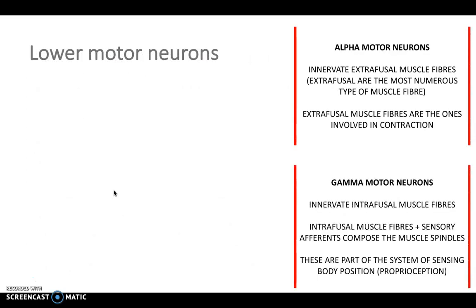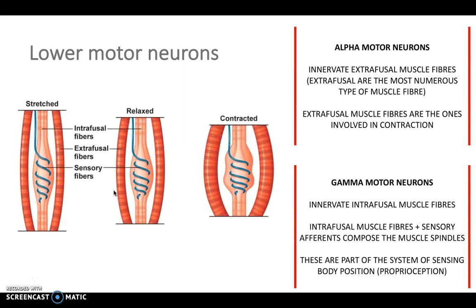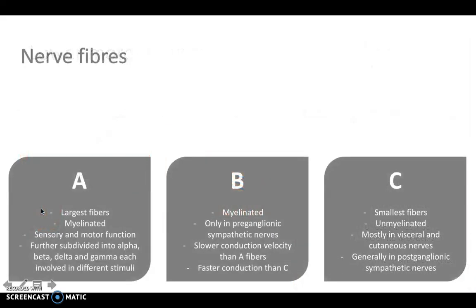Lower motor neurons can be alpha or gamma. Alpha motor neurons innervate extrafusal muscle fibers — these are the most numerous type of muscle fiber, essentially involved in contraction. Gamma motor neurons innervate intrafusal fibers, and these are the ones with sensory afferents that compose the muscle spindles, which center our body position — so proprioception.